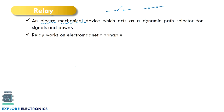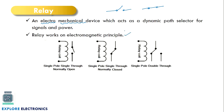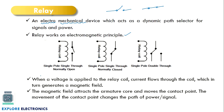This relay works on the principle of electromagnetism. A relay generally contains a coil. By energizing this coil with an external voltage we can make the circuit close. When external voltage is applied to the coil, there will be current flow, which generates a magnetic field across the coil. Due to the magnetic field, it attracts the switch — called the armature — towards the coil, making the circuit close. Once the voltage is removed, the armature returns to its normal position and the switch is open.